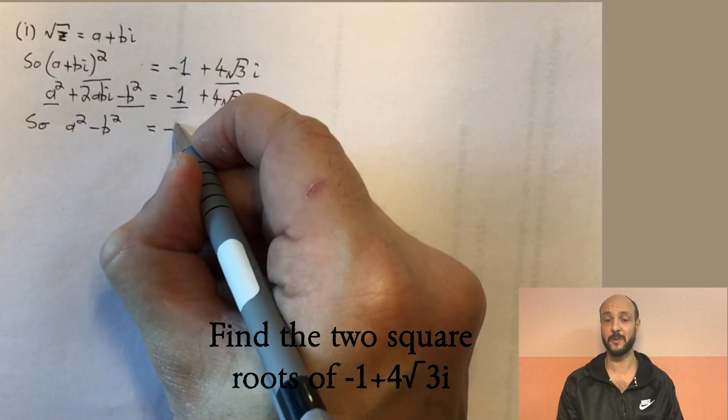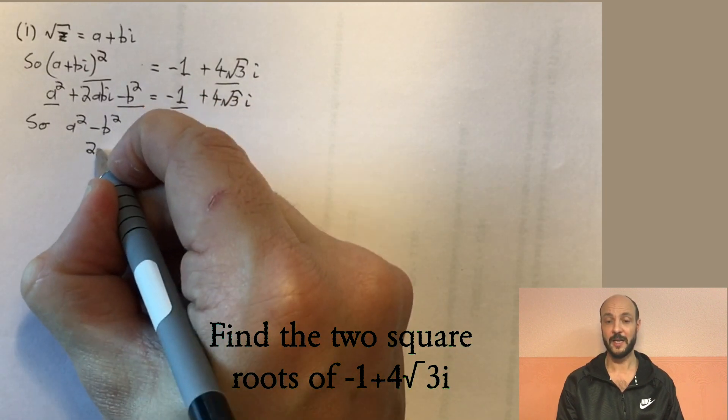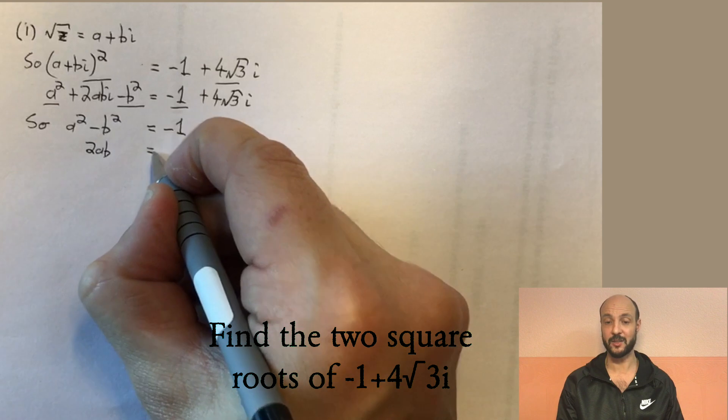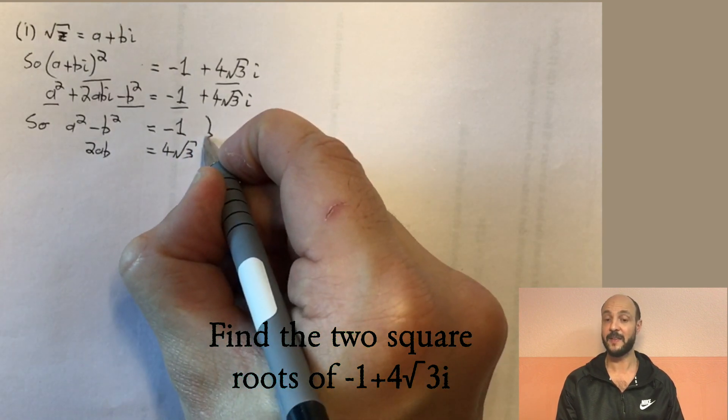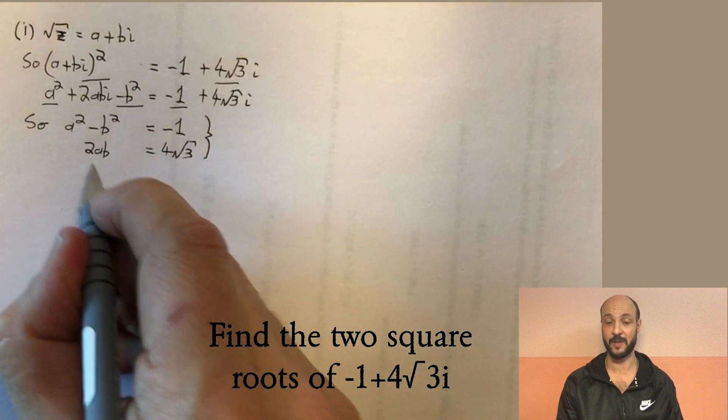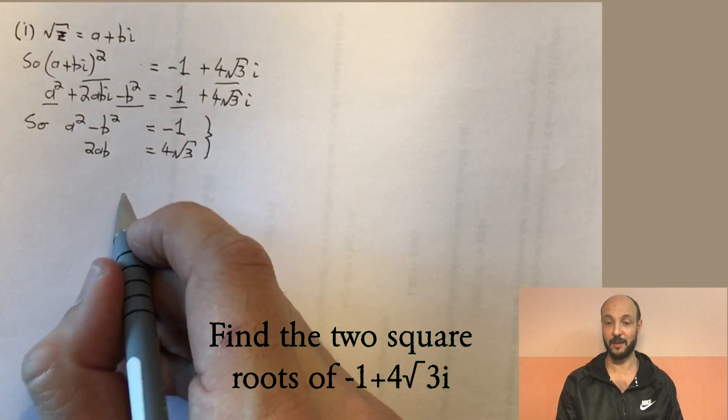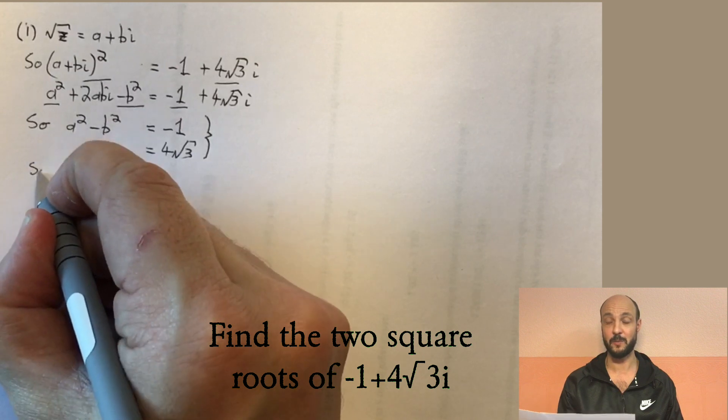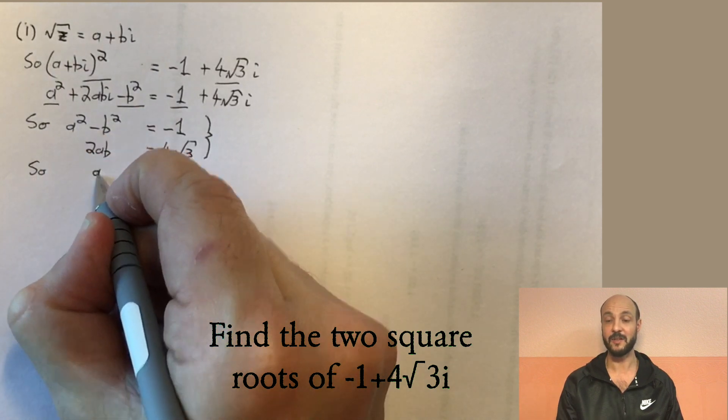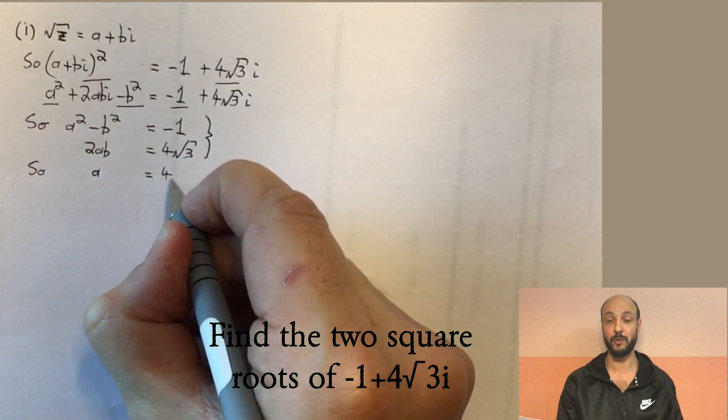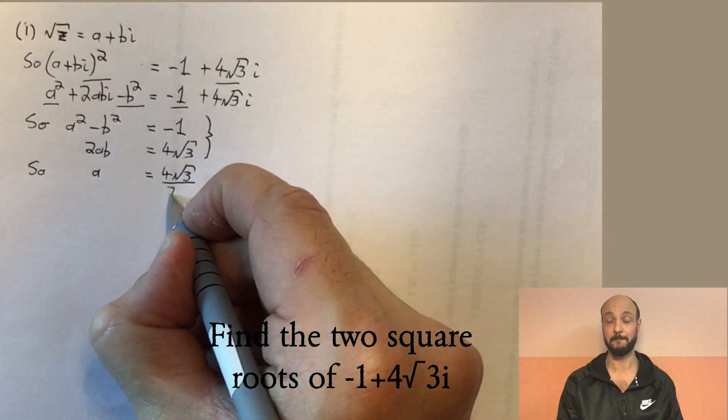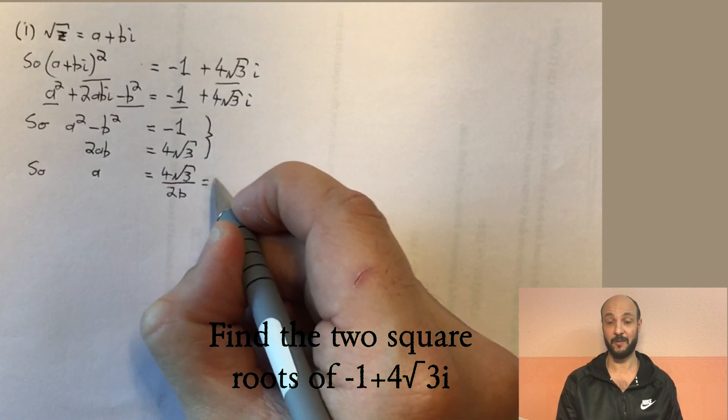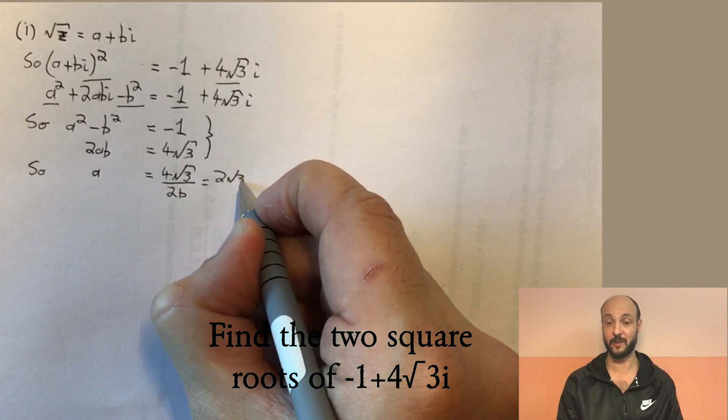Now what we have to do is compare the real component on the left hand side and the right hand side of the equation, and also compare the imaginary component on the left hand side and the right hand side of the equation. So what we have is a squared minus b squared equals minus one and two ab equals four root three. Now this is a system of two equations that we can solve. In order to solve it, we can start off by finding out a value for a in the second equation and then substitute that into the first equation. Now here to get our value for a, we divide both sides by two b in the second equation to give us a is equal to four root three over two b or two root three over b.